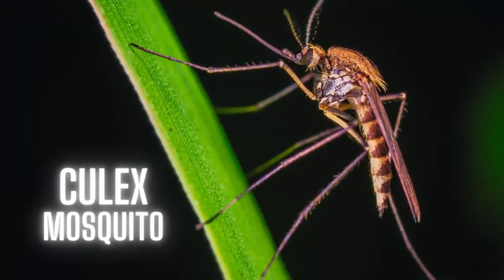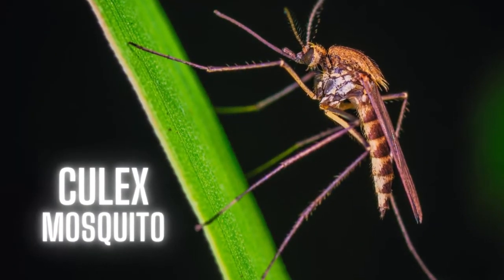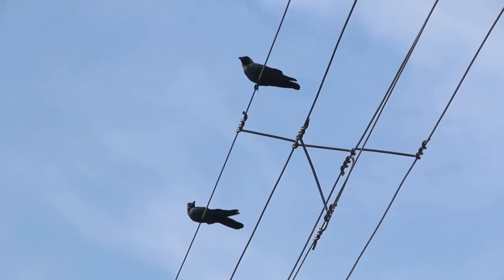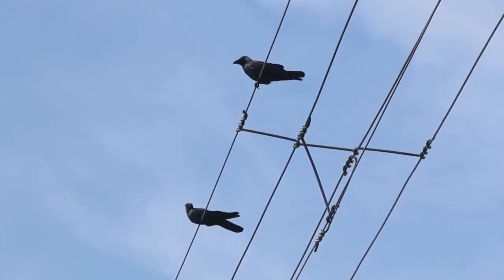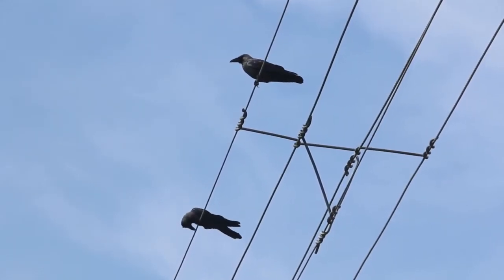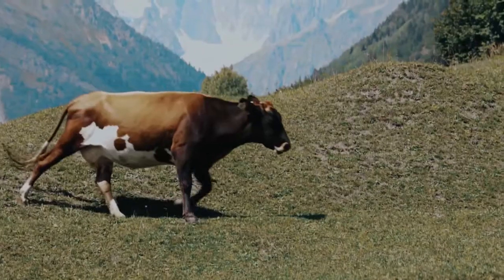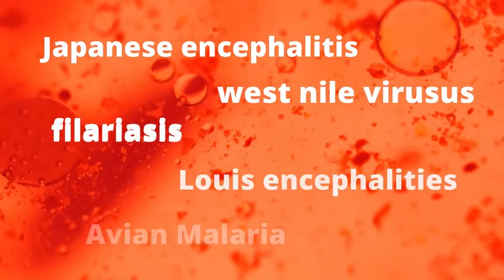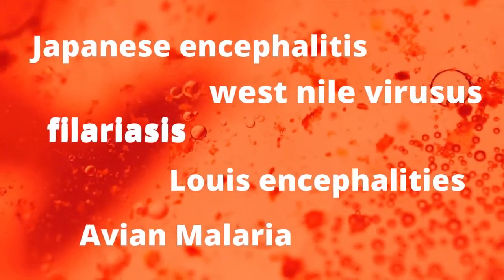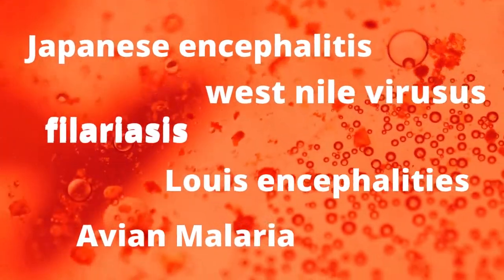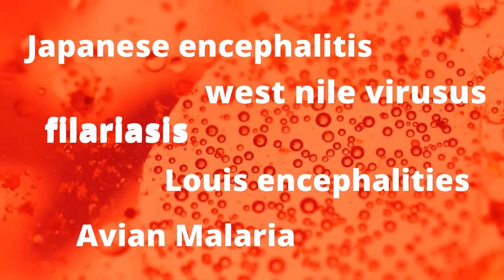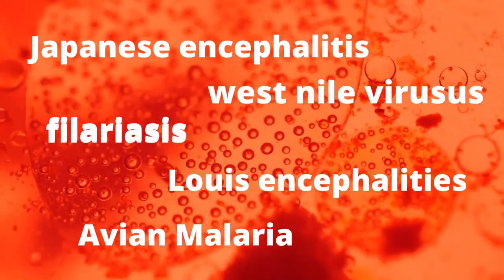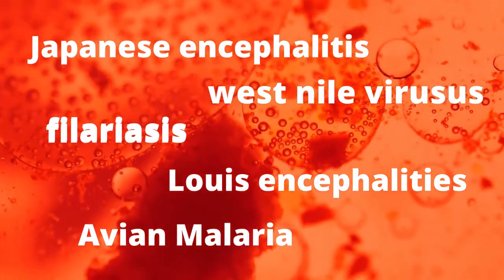Culex is a genus of mosquitos. Many species of Culex mosquito vector one or more important diseases of birds, humans, and other animals. The diseases they vector include arbovirus infections such as West Nile virus, Japanese encephalitis, St. Louis encephalitis, filariasis, and avian malaria.